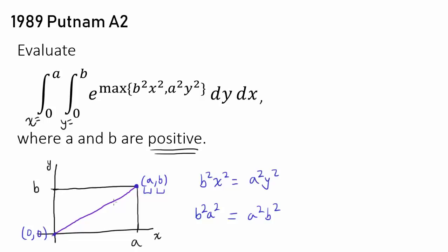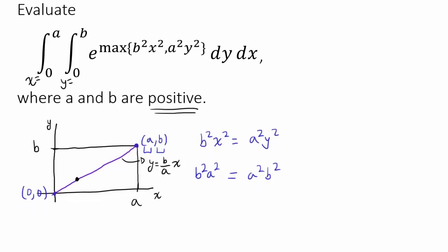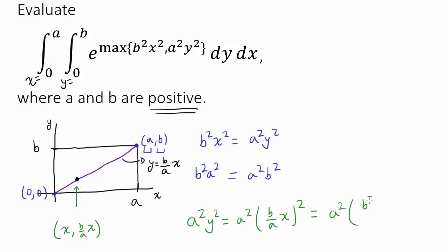It looks like it. The equation of this line is y equals b over a times x. For any point along this line, the coordinate is (x, b/a · x). Then a squared y squared equals a squared times (b/a · x) squared equals b squared x squared — the a squared cancels. So b squared x squared equals a squared y squared for any point on this diagonal line.